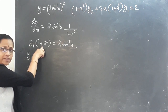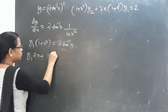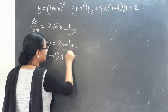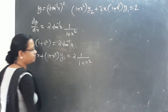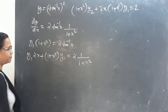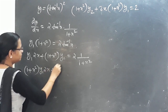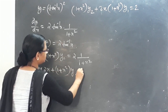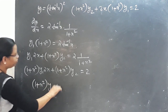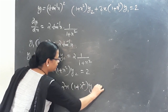Applying the product rule to y1·(1+x²) = 2·tan⁻¹x: y2·(1+x²) plus y1·2x equals 2 times 1 by (1+x²), since the derivative of tan⁻¹x is 1/(1+x²). Cross multiplying gives: (1+x²)·y2 plus 2x·(1+x²)·y1 equals 2. This is proved.